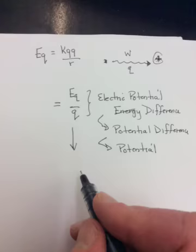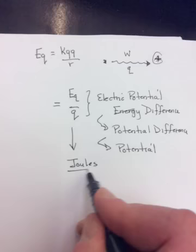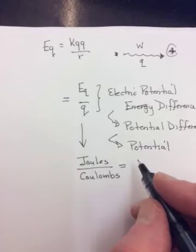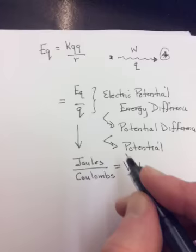If you look at the units up here, EQ is energy, so it's going to be joules. And charge is measured in coulombs, C-O-U-L-O-M-B-S. And a joule over a coulomb, we rename. And those of you that have already taken Physics 12, you know this. It's called a volt.